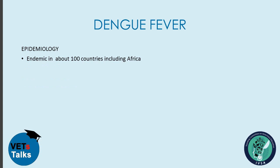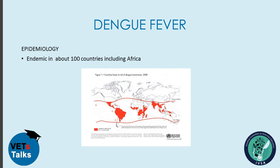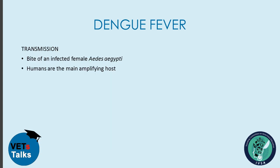Regarding the epidemiology of dengue fever, it is endemic in about 100 countries, including countries in Africa, Southeast Asia, the Americas, and others. Areas shown in red on screen are countries at risk of dengue fever. Transmission is basically through the bite of an infected female mosquito of the genus Aedes, species aegypti. Humans are the main amplifying host of this virus. After a virus incubation period of 8 to 10 days, an infected mosquito is capable of transmitting the virus to susceptible individuals for the rest of its life.